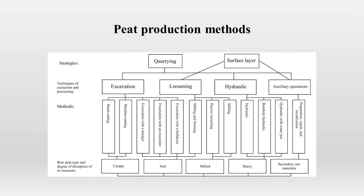All peat production techniques can be divided on the basis of two strategies – peat quarrying and surface layer production. These two strategies encompass three main technologies of peat production – excavation, luthering, hydraulic extraction and auxiliary operations. Quarrying includes excavation and hydraulic extraction, while luthering refers to surface layer production. Both strategies require performing auxiliary operations.